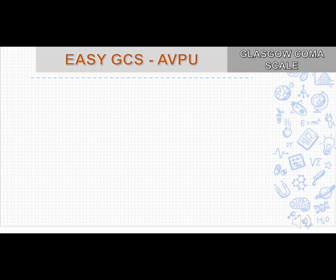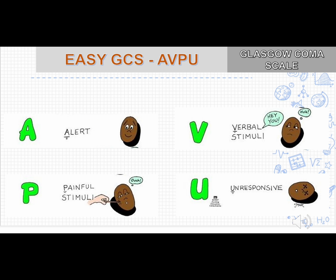In an emergency situation, if you cannot assess the full GCS, you can use the easy AVPU scale: Alert, Verbal stimuli, Painful stimuli, Unresponsive. If the patient responds and obeys commands, mark A (alert). If the patient responds only when you shout — verbal stimuli — mark V. If the patient only responds to pain, mark P. If the patient doesn't respond to any stimuli, mark U (unresponsive). AVPU can also be used when there are interfering factors or limitations to assessing the full GCS.